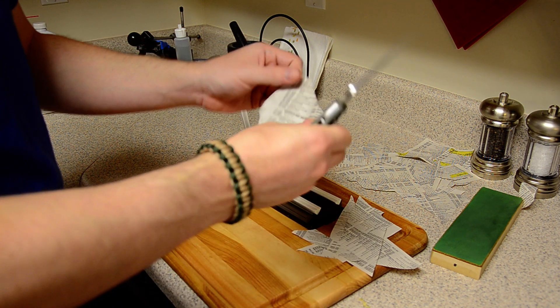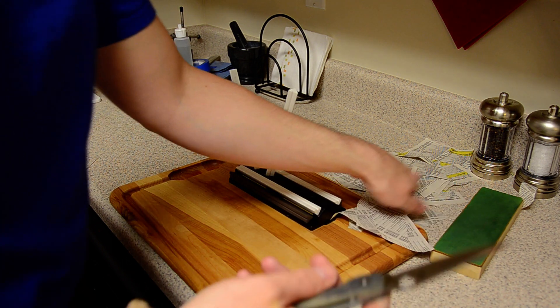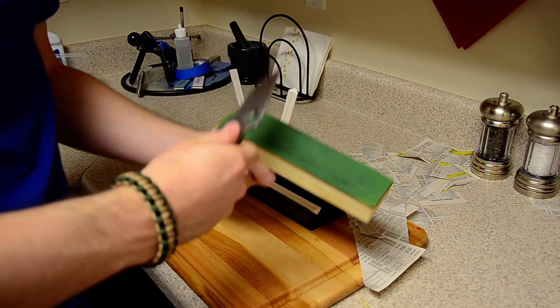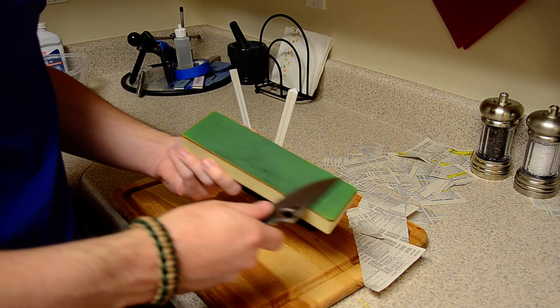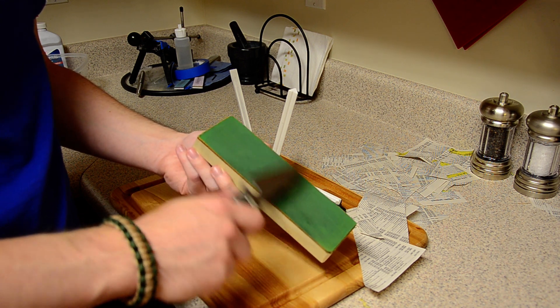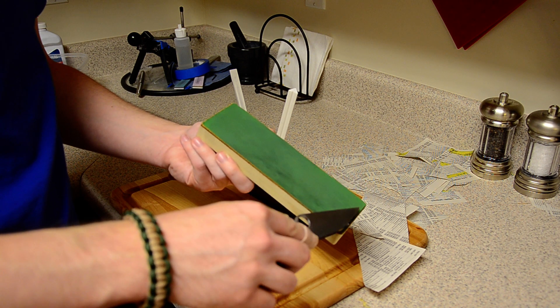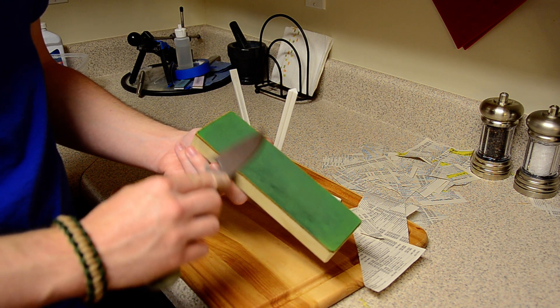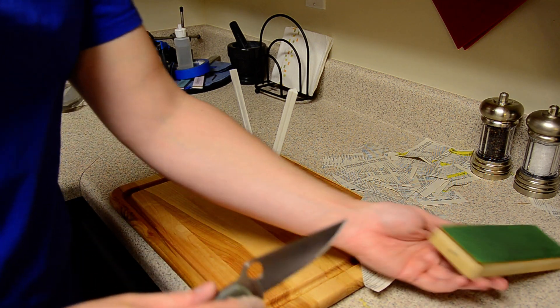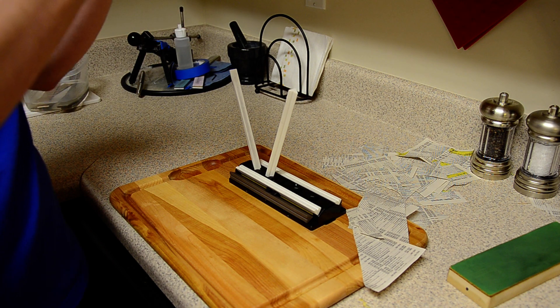So I took a fairly damaged edge and brought it back to damn near hair whittling sharp in about 15 minutes. So anybody who is using the Sharpmaker at home don't feel undergunned because it is capable, it just takes a little getting used to. But the main tip I can give is use the 40 degree setting and stop focusing so much on keeping your angle perfect, just try and keep it consistent.